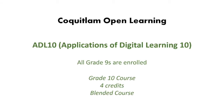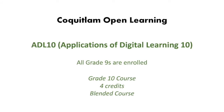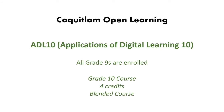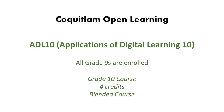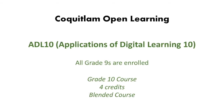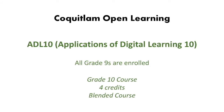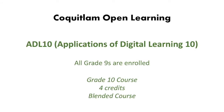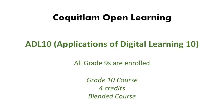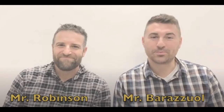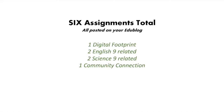The course will have you explore various learning fluencies and create technology projects throughout the year, helping students become educated and responsible online citizens. All grade nines at Riverside are enrolled, and it gives you four grade 10 credits toward high school graduation. It is a blended course — part online, part in person — with two teachers: Mr. Robinson and Mr. Barisall. There are six total assignments, all posted to your EduBlog.